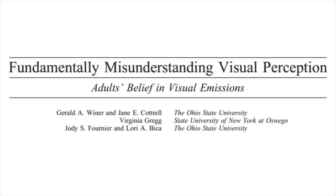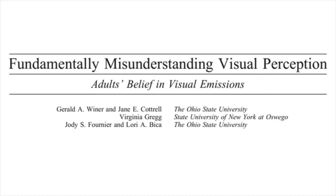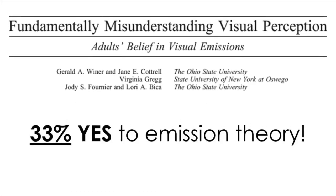Now this is 21st century, and we think we should know better than those literally ancient people, but in 2002, a team of psychologists conducted a research asking university students about the way we see things, and what they found was very interesting, to say the least. When they were asked whether something goes out of the eyes in the process of seeing, 33%, one third of the students said yes to the emission theory of vision.